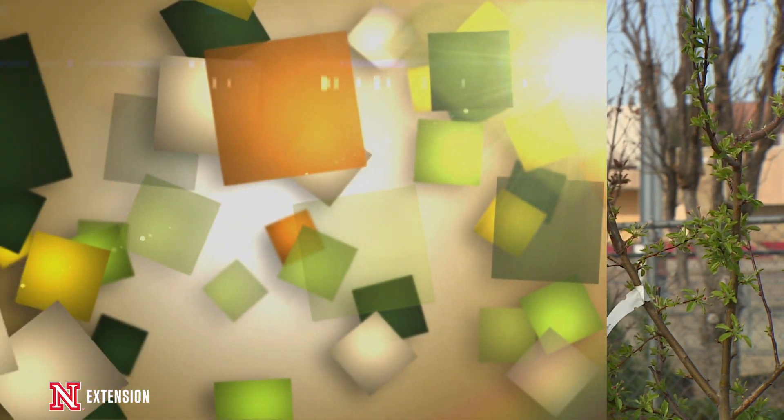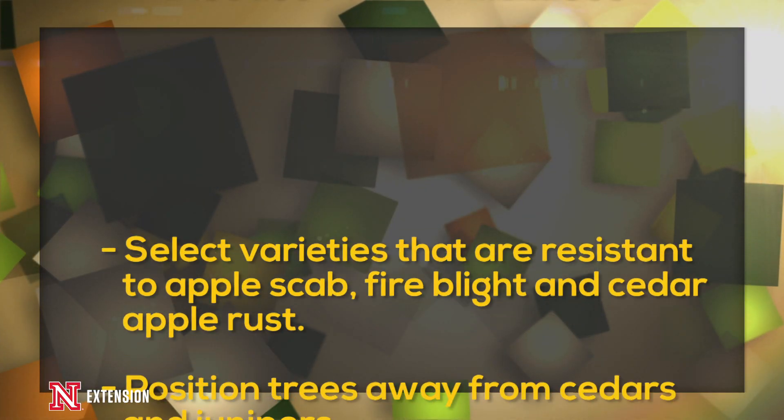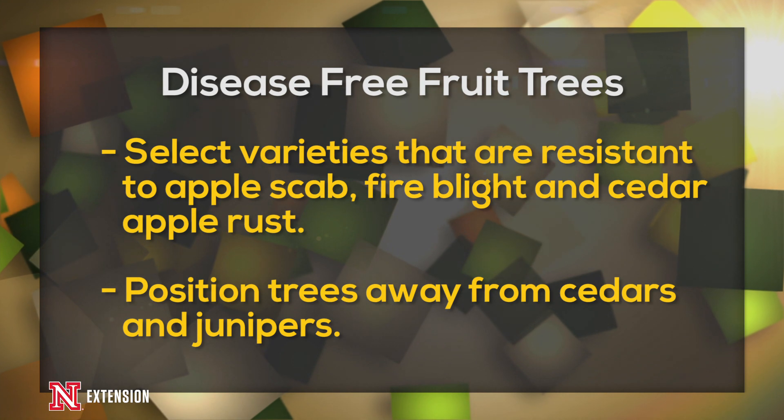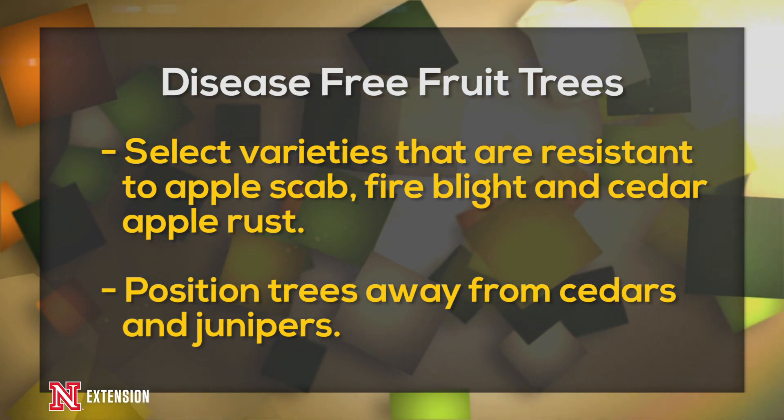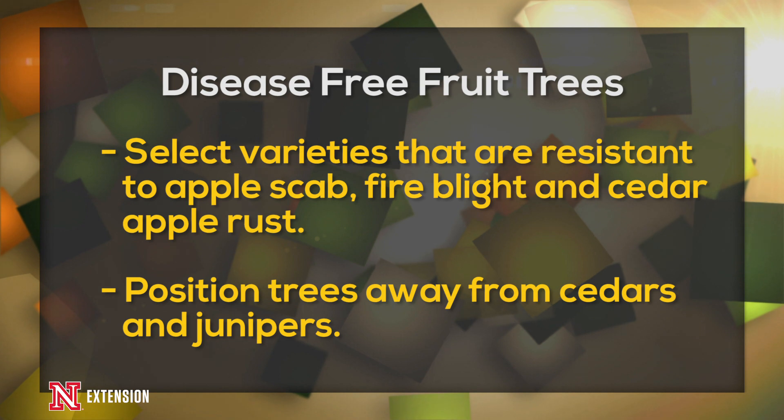If we put a juniper in close proximity to an apple tree that's susceptible to cedar apple rust, that's going to create an environment significant for disease that's going to occur very frequently. So make sure that you're positioning those types of trees in your landscape correctly and that you have some resistance, particularly with the flowering crabs and apple trees.